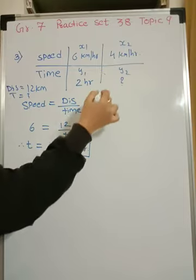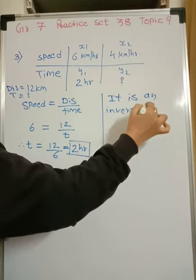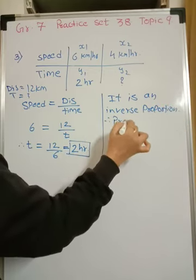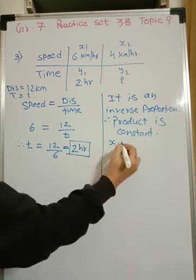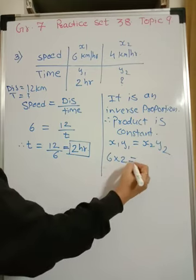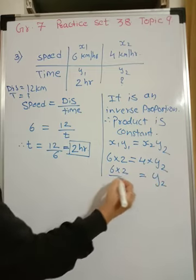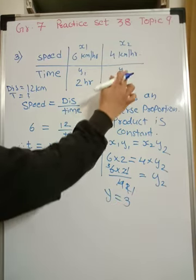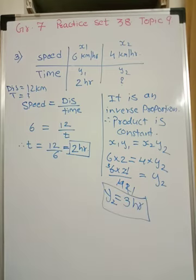After writing this first answer, write it is inverse proportion. Product is constant. Product means X1 Y1 equals X2 Y2. Substitute the values: 6 into 2 equals 4 into Y2. Y2 equals 6 into 2 upon 4. 2 twos are 4, 2 threes are 6. Y2 equals 3. We got Y2 equals 3 and time is in hours. Second answer is 3 hours. First was 2 hours.